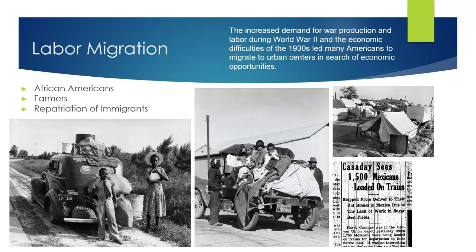These migration patterns helped the United States transition from a largely agrarian society to one that was increasingly urban. That's what you need to know about Topic 7.10, The New Deal. Be sure to keep up with your reading and I'll catch you in the next video.